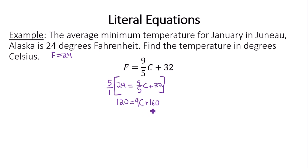So now to get C by itself we take away the 160 from both sides. Negative 40 equals 9C. Since we're multiplying by 9, we should divide both sides by 9 and you're going to get about negative 40 divided by 9 is really close to negative 4. That's what C is. C is negative 4 degrees.